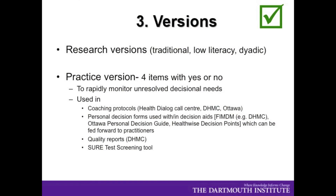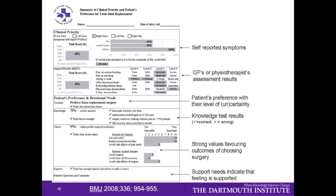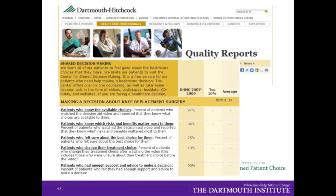There is a research version and a practice version — the SURE — which you've just looked at. It allows you to rapidly monitor decisional needs. It's used in coaching protocols with nurses, on personal decision forms, in quality reports, and as a screening tool in primary care. An example used in Ottawa, with Ivan Tomek helping to develop it at Dartmouth, summarizes clinically what's going on with the patient — their preference, how knowledgeable they feel, their values, and how supported they feel. The four SURE items are included, along with decision quality items.